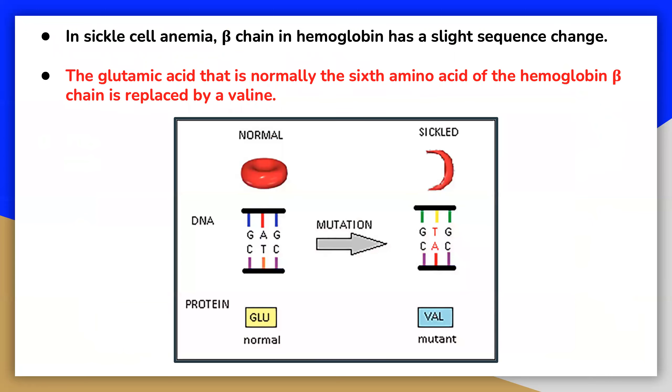For instance, a single amino acid change is associated with sickle cell anemia, an inherited disease that affects red blood cells. In sickle cell anemia, one of the polypeptide chains that make up hemoglobin, the protein that carries oxygen in the blood, has a slight sequence change.